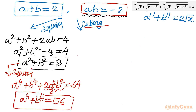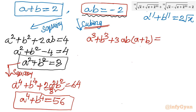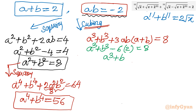Now let us consider cubing. Using the (a+b)³ formula: a³ + b³ + 3ab(a+b) = 2³ = 8. Putting in the values of ab = −2 and a+b = 2: a³ + b³ + 3×(−2)×2 = 8, so a³ + b³ − 6×2 = 8. Therefore a³ + b³ = 8 + 12 = 20.